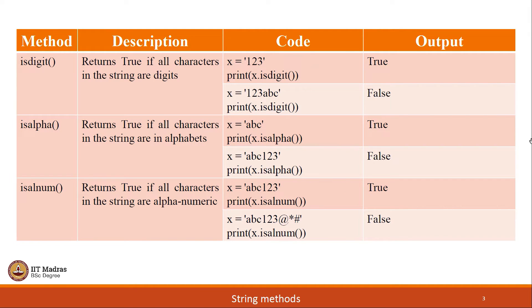Next set of string methods are isdigit, isalpha and isalnum. As the name suggests, isdigit checks whether all the characters in the string are digits or not. If that is the case, it will return true or else it will return false. Isalpha checks whether all the characters in the string are alphabets or not. Accordingly, it will return true or false.